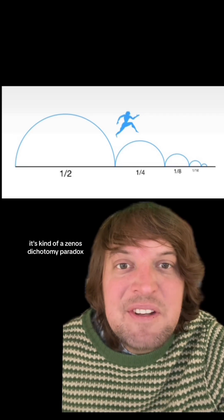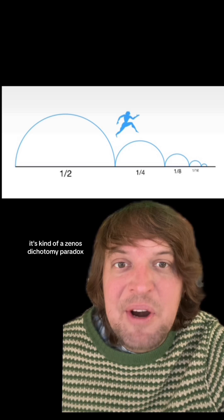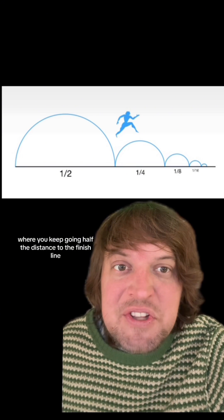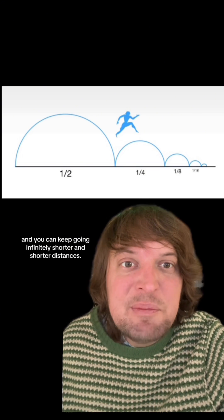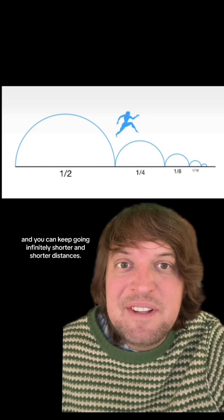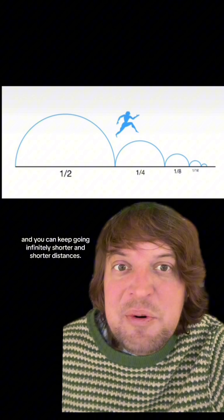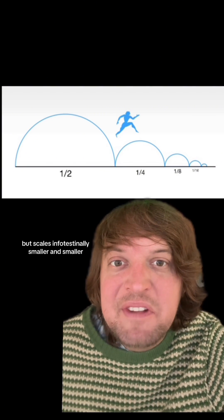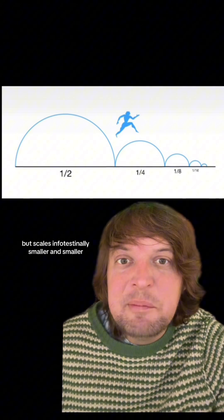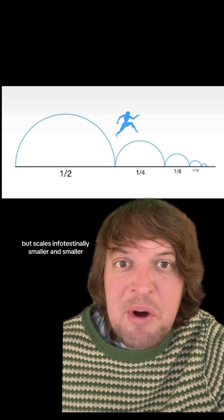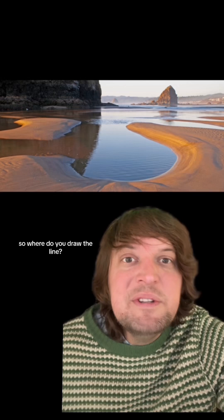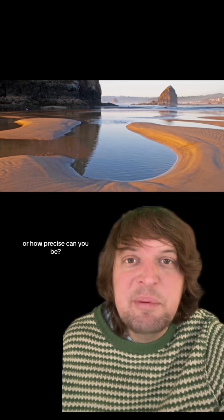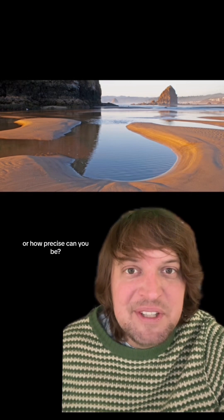It's kind of like Zeno's dichotomy paradox, where you keep going half the distance to the finish line, and you can keep going infinitely shorter and shorter distances. It approaches a length value, but scales infinitesimally smaller and smaller. So where do you draw the line — how precise do you want to be, or how precise can you be?